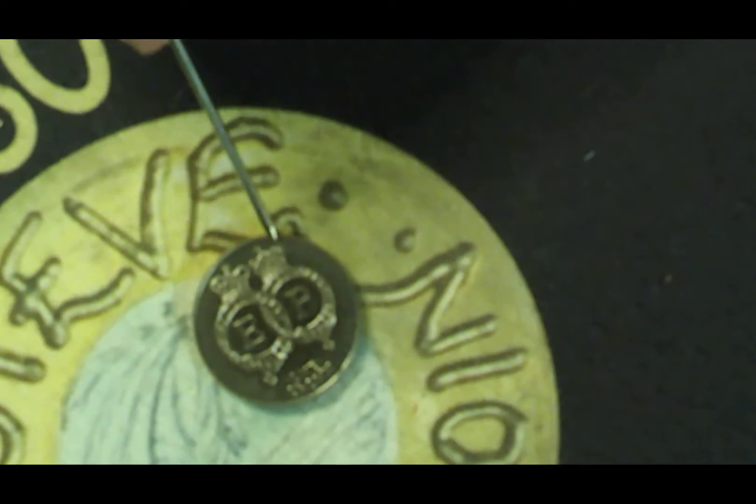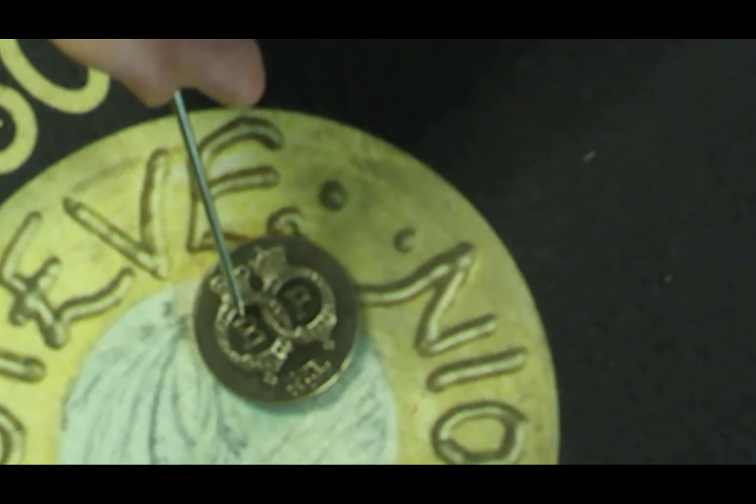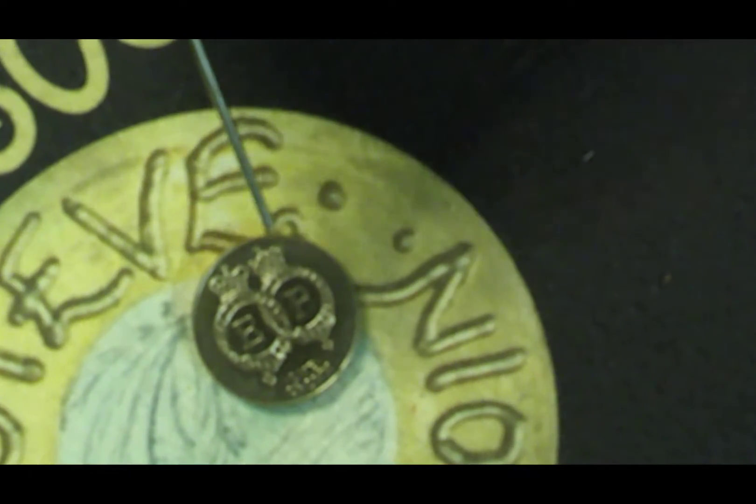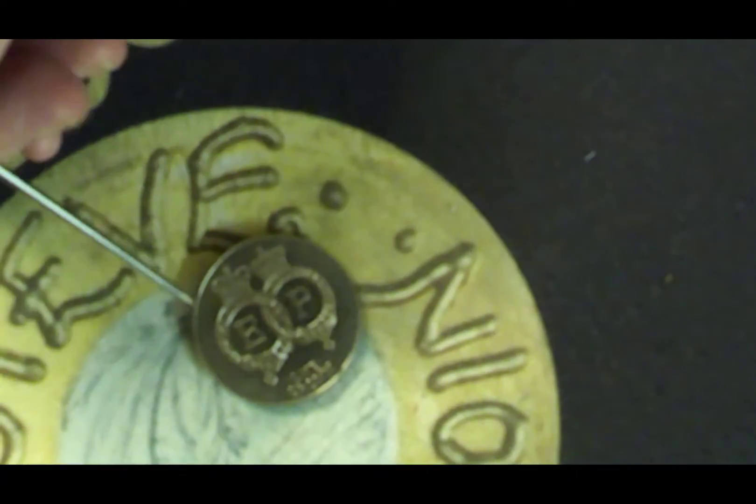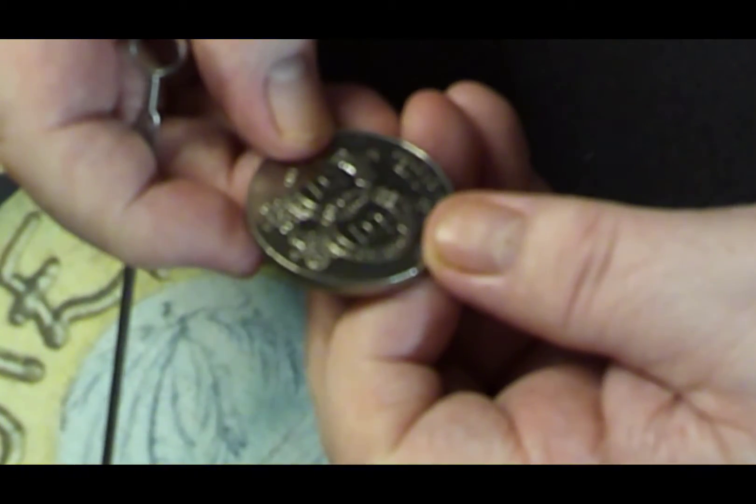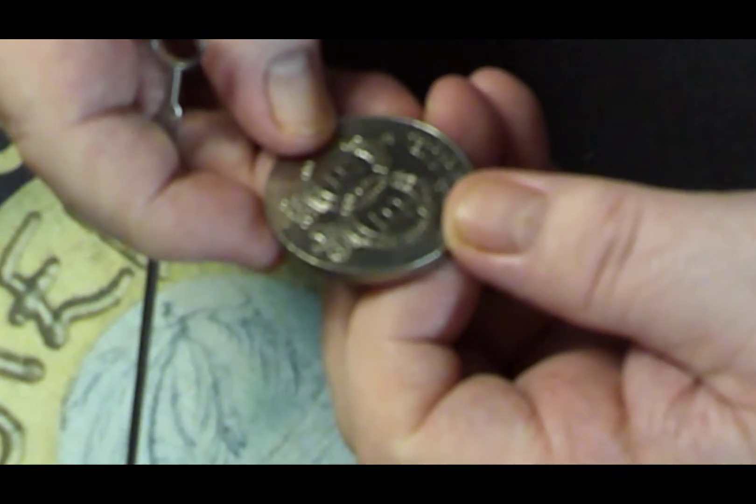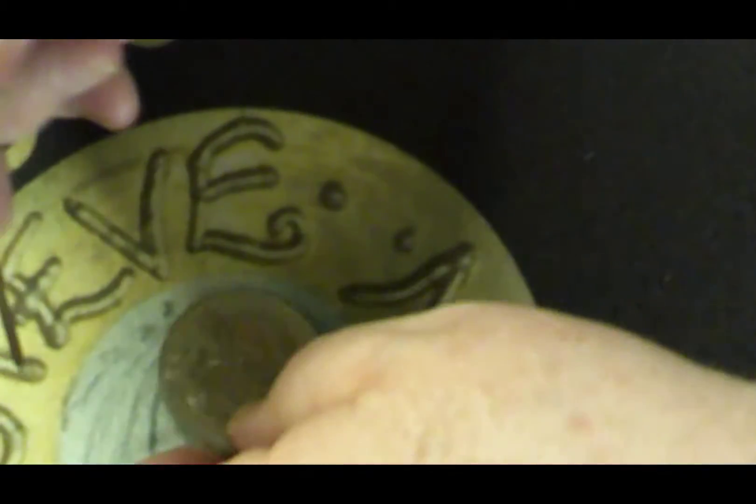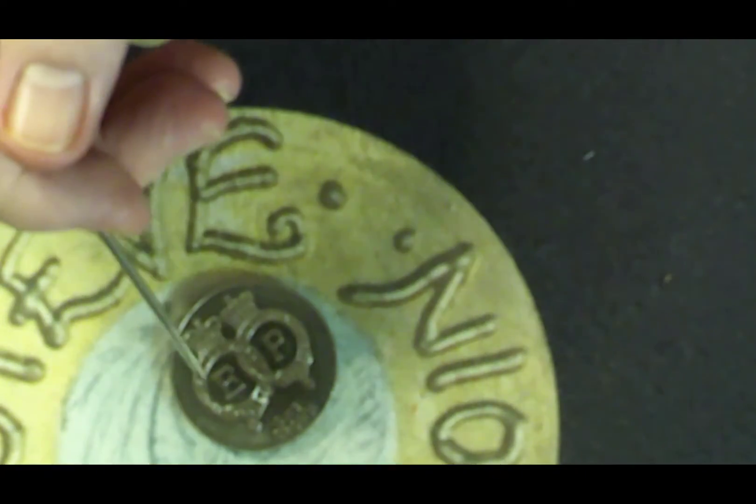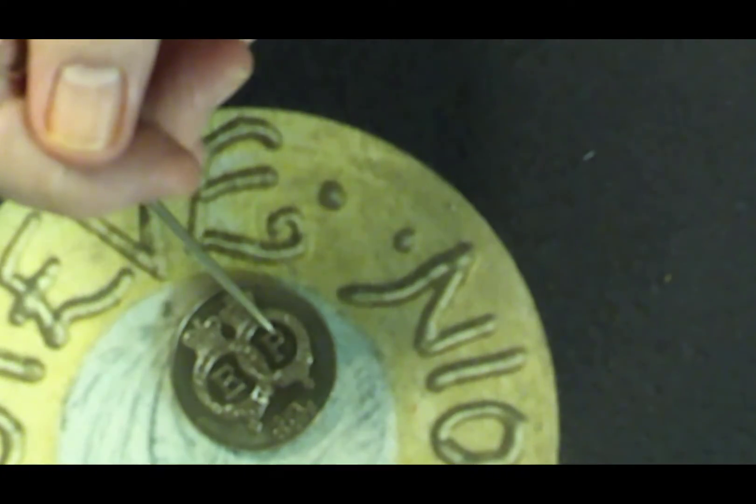It has two crowned ciphers, one with E and one with P, interlocked crowns on the top of both of them. Or I should say one's a crown and one's a coronet, and it has interlocked ciphers with E and P in the two ciphers.